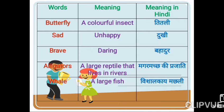That lives in rivers. A large reptile that lives in rivers. Reptile means the animals that crawl — for example, lizard, snake, crocodile — these are all what we call reptiles. Hindi meaning: magarmach ki prajati — not exactly magarmach, but like that, it is similar to it.